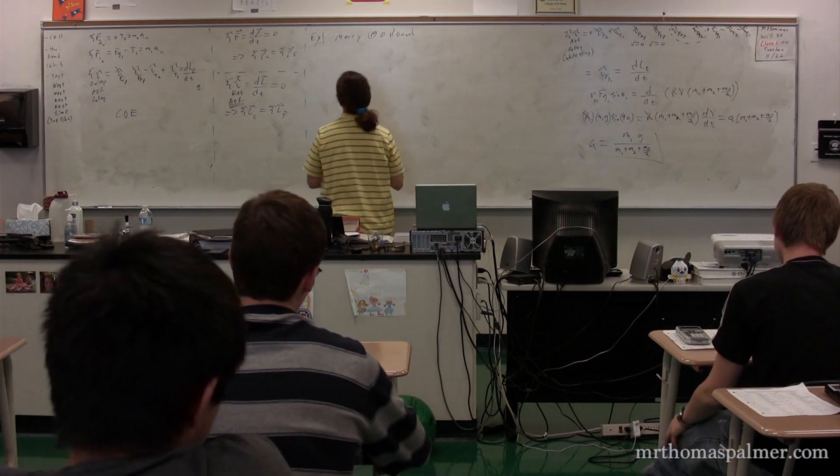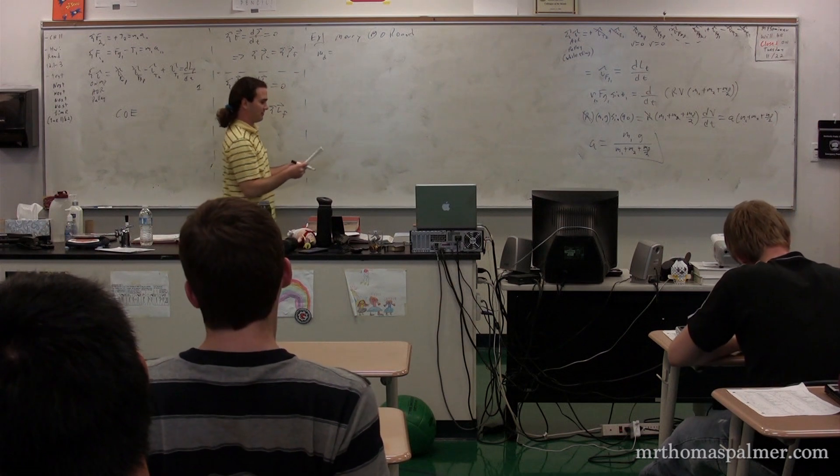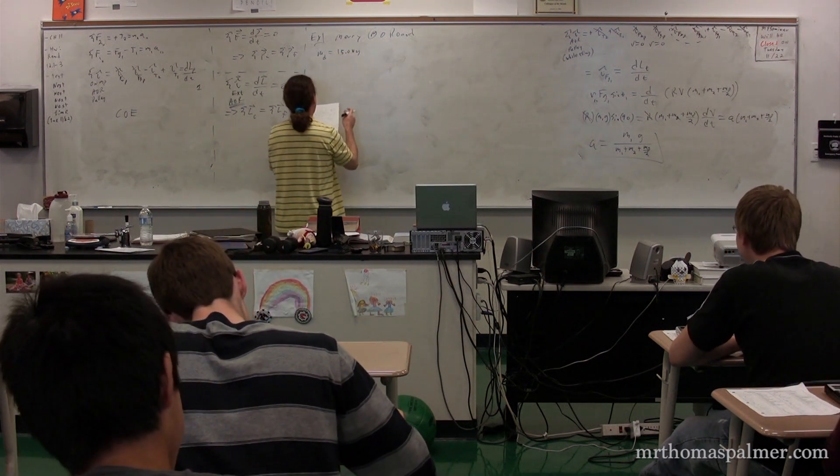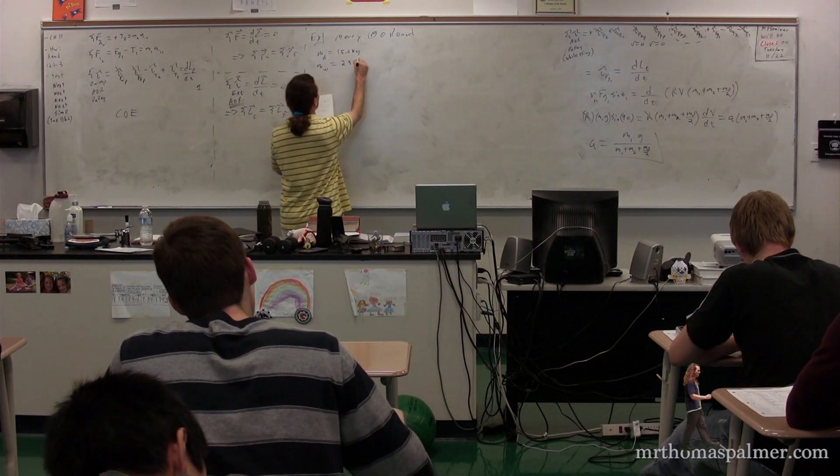In this example, we're going to have my daughter—I wrote this a long time ago, she's no longer 15 kilograms—15.0 kilograms, and the mass of the merry-go-round, which is a wheel, is approximately 235 kilograms.